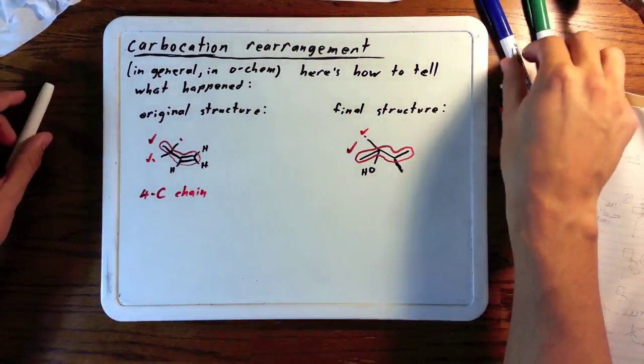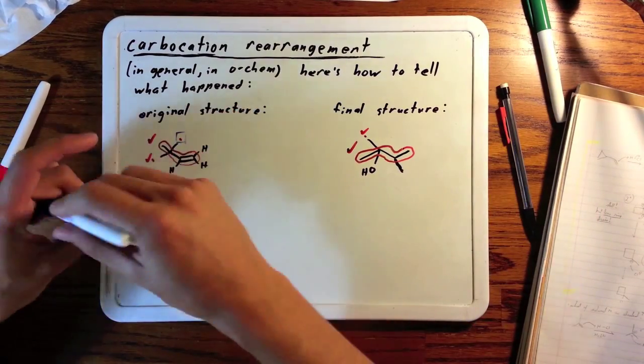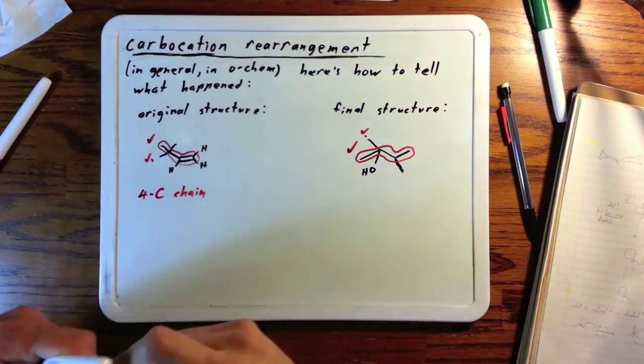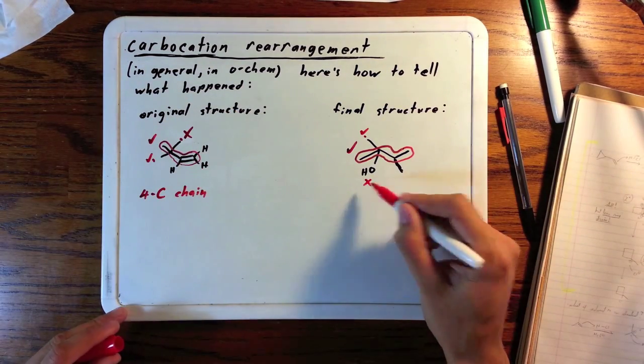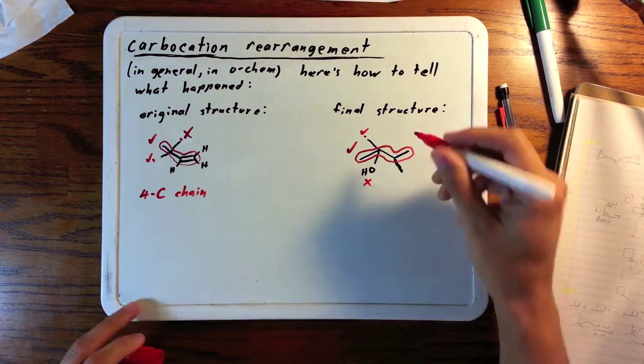We'll mark one of the originals as good, still in the product, and one of them is missing. The OH is very obviously new and you see a double bond missing. There's also an extra hydrogen over there.